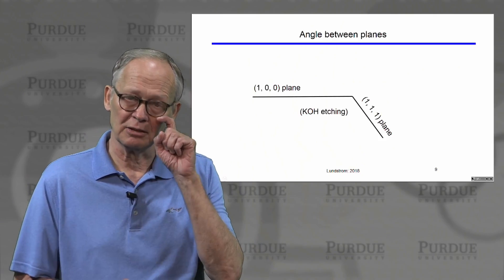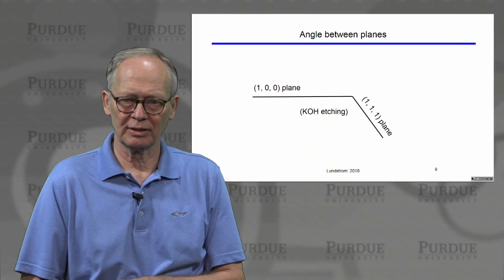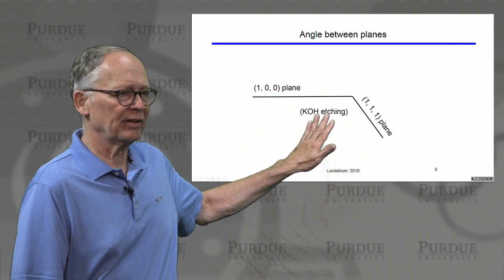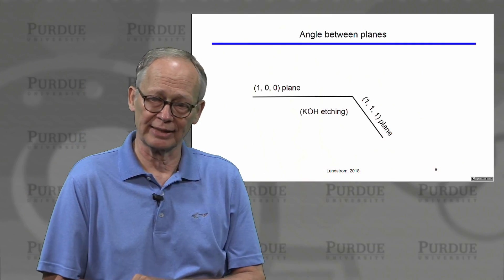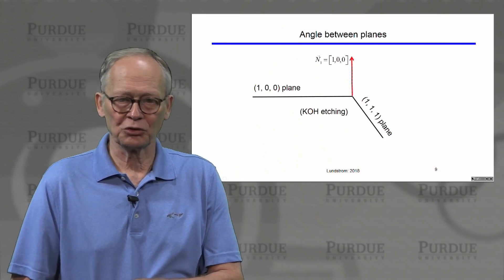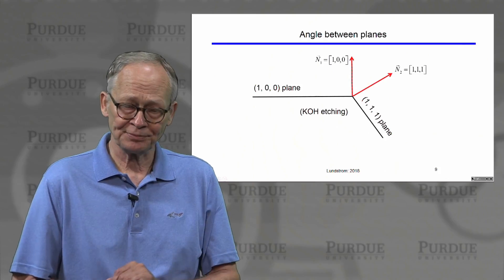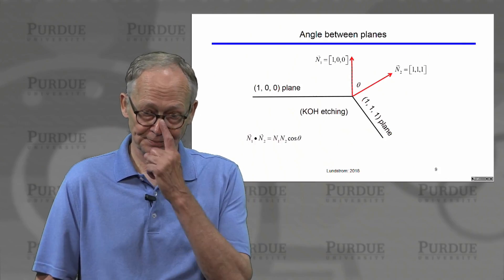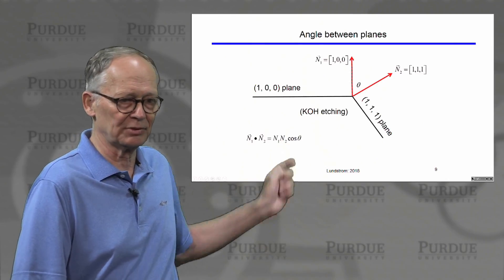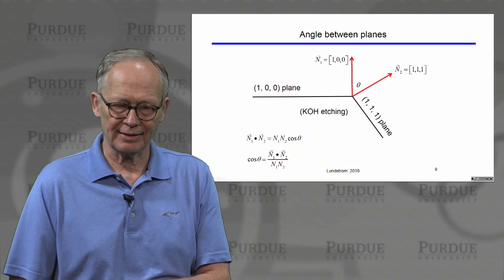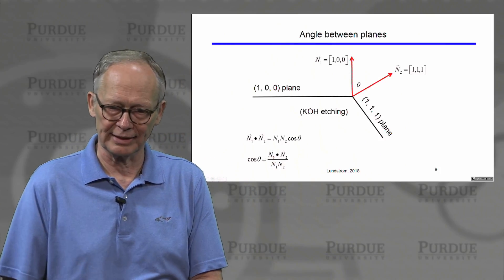There are even more things we can do with this convenient Miller notation. For example, if we have a (1, 0, 0) plane of silicon and a (1, 1, 1) plane of silicon, what is the angle between these two planes? By the way, there are various etchants like KOH that preferentially etch certain crystal directions, so we can actually produce structures like this used in semiconductor applications. The normal to the (1, 0, 0) plane is the [1, 0, 0] direction, and the normal to the (1, 1, 1) plane is the [1, 1, 1] direction. The angle between the planes is the angle between these two normals.